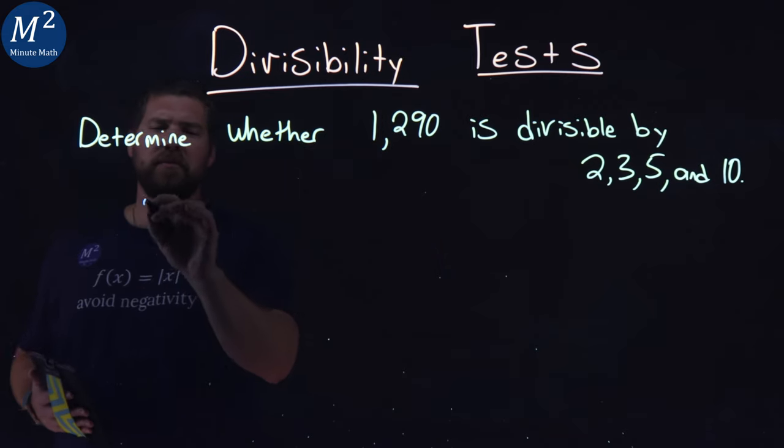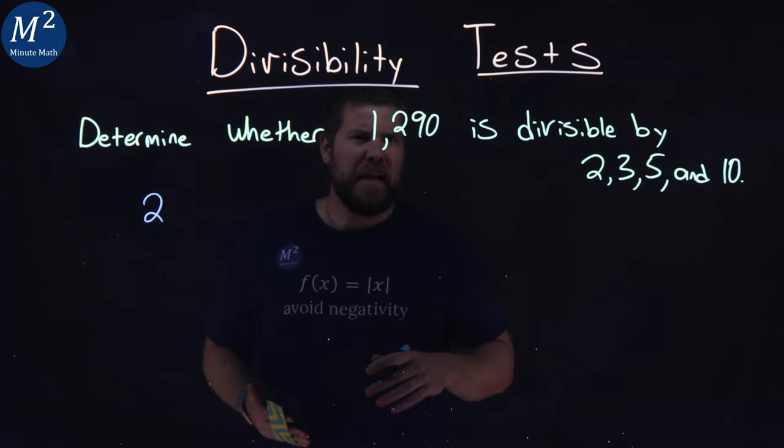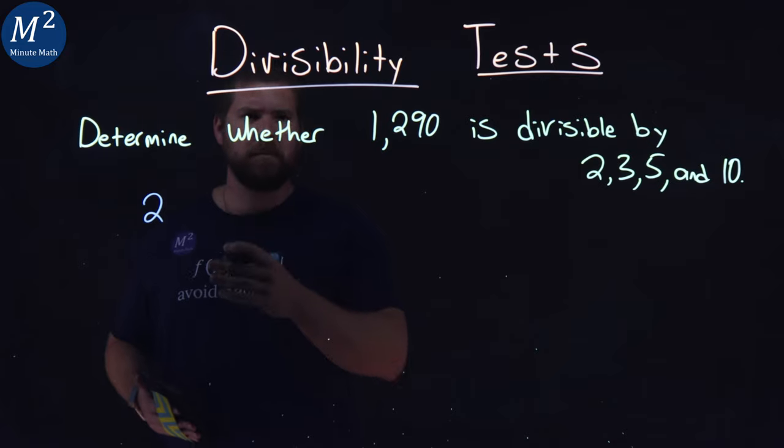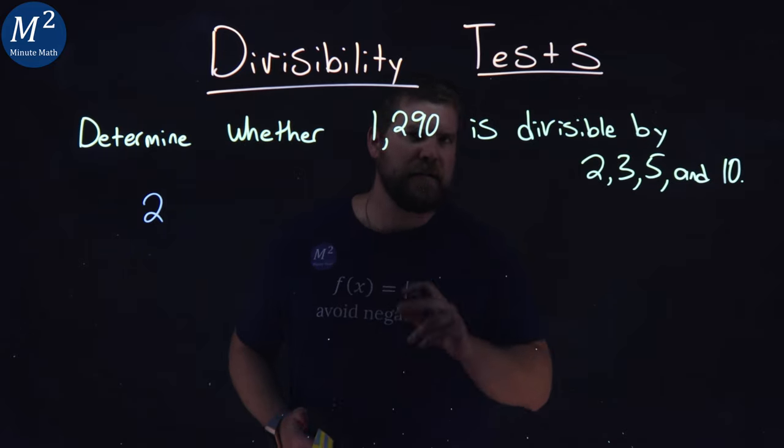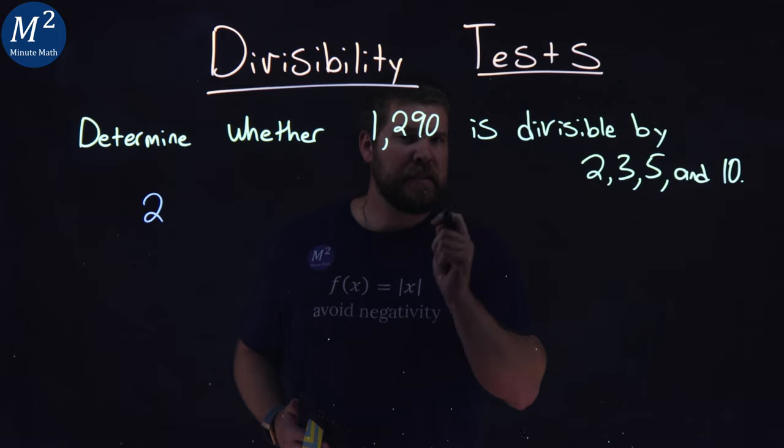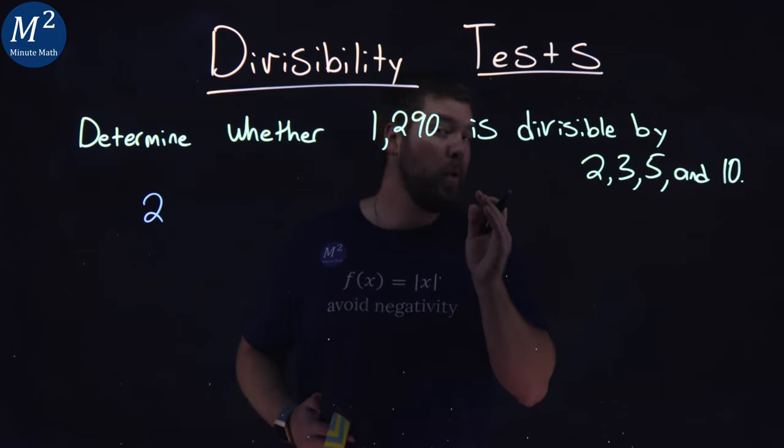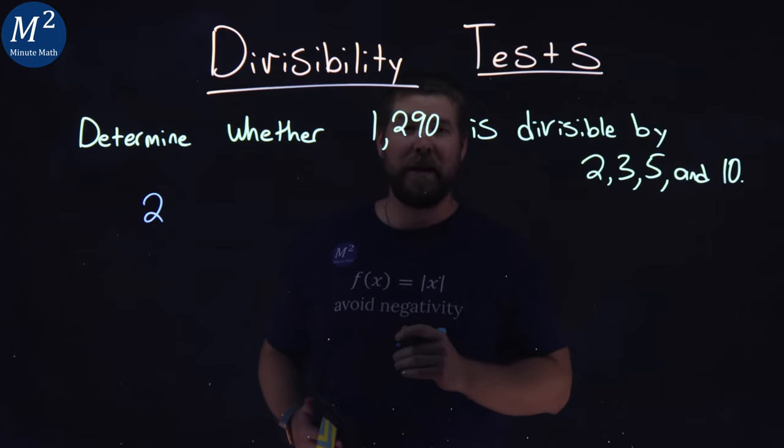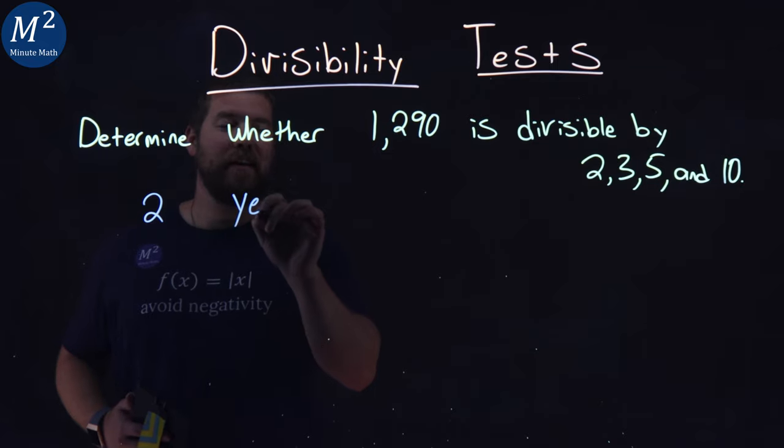Let's start with 2. Is it divisible by 2? What's the last digit? Let's look at it. It's a 0. If it ends in 0, 2, 4, 6, or 8, it is divisible by 2. So that is a yes.